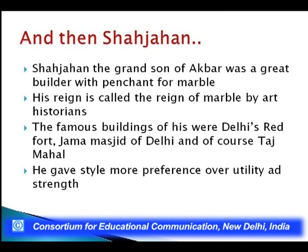After Akbar came Jahangir, whose buildings are not primarily in India — except the tomb of I'timad-ud-Daulah, father of Nur Jahan and father-in-law of Jahangir. We give this a go-by because all the defining features would come together in Shah Jahan's time. Shah Jahan was Akbar's grandson and the great builder of the Mughals. He had a penchant for marble — his reign is called the Reign of Marble by art historians. His famous buildings include the Delhi Red Fort, the Jama Masjid of Delhi, and of course the Taj Mahal. He gave style and aesthetics preference over utility and strength.